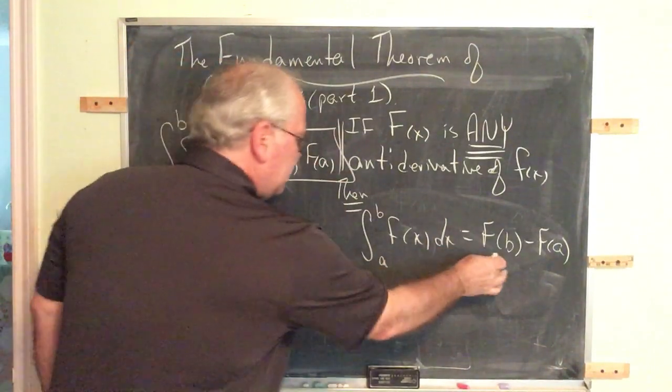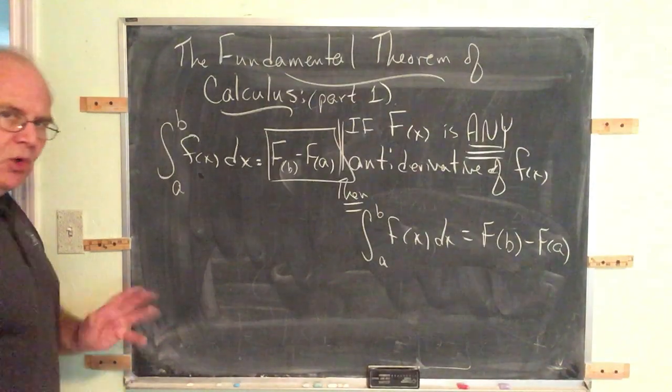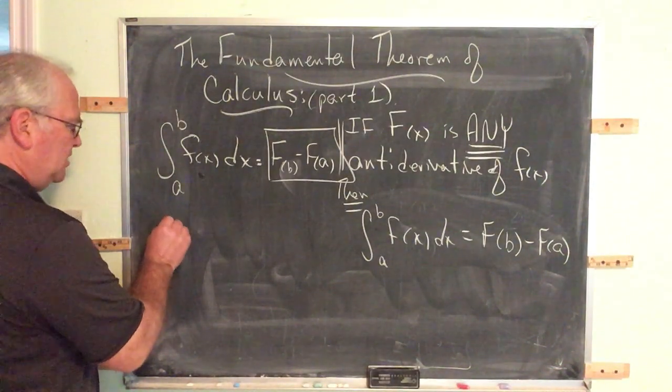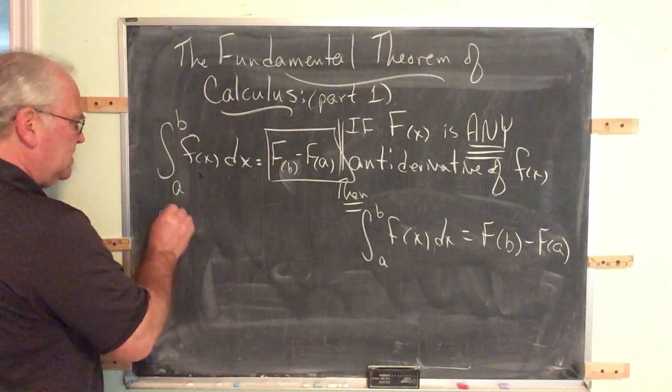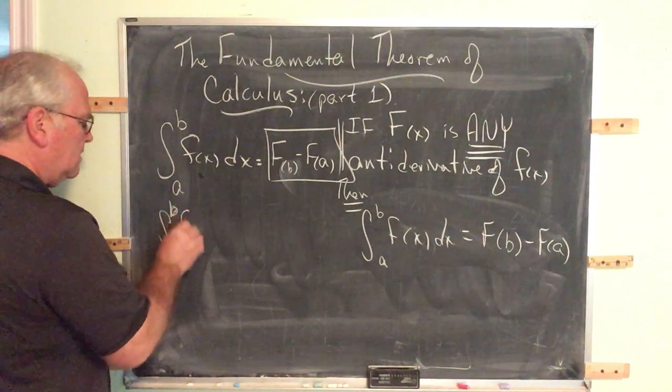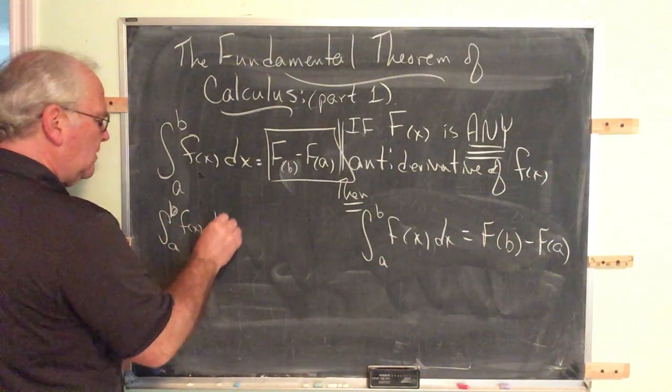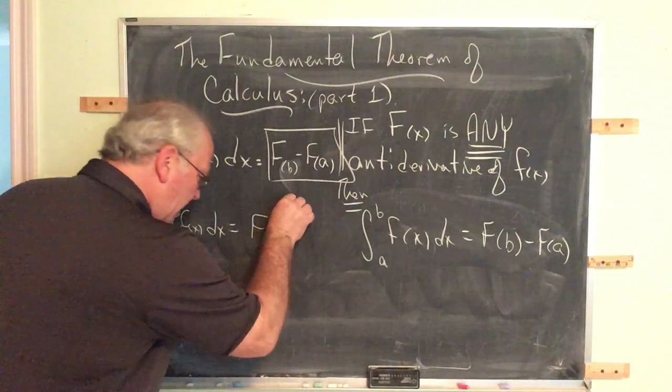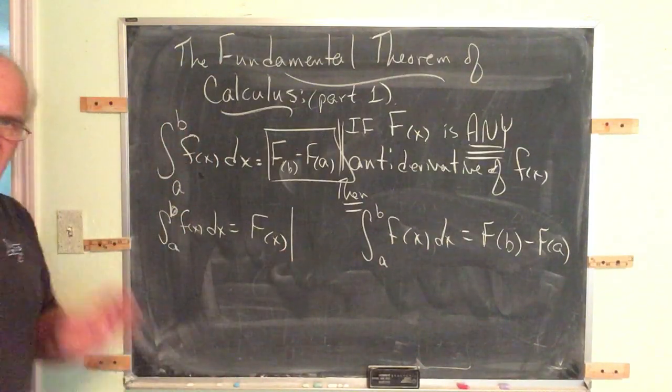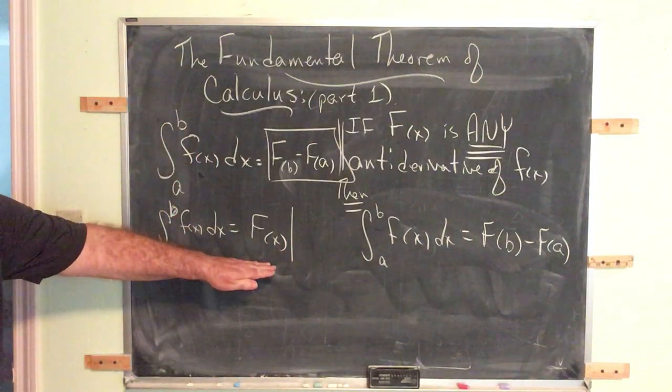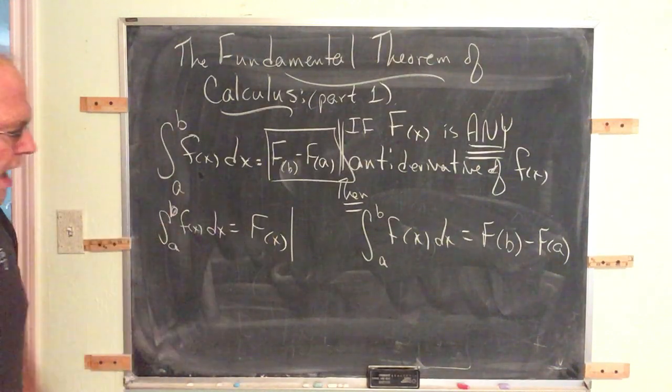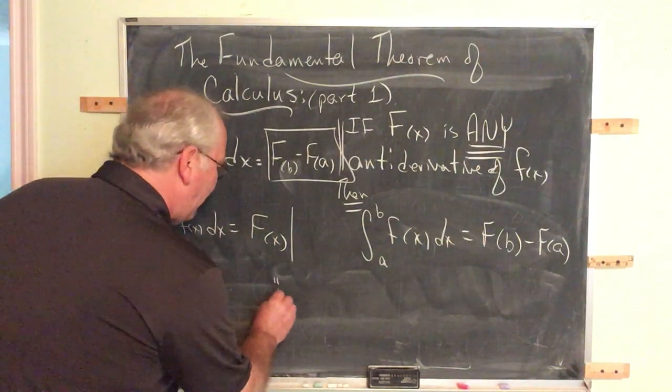Now, this symbol has a shorthand notation. We write that so frequently, there's a shorthand notation. So we write this, we may write this as cap F of x, and then you write a vertical line. Anyone who knows what you're doing knows what that symbol means. This is standard in all the textbooks. A vertical line, and you read that evaluated.